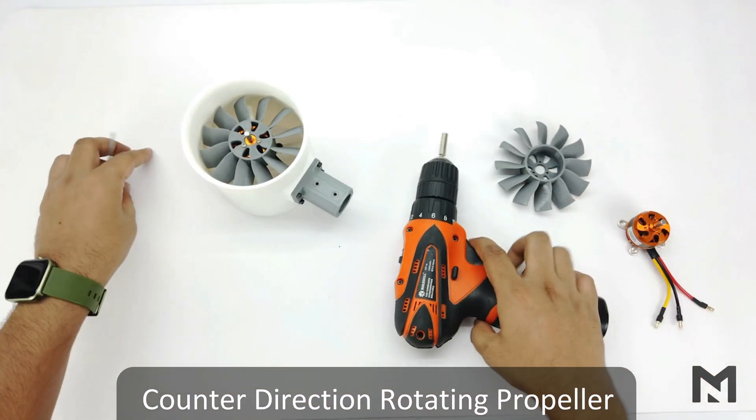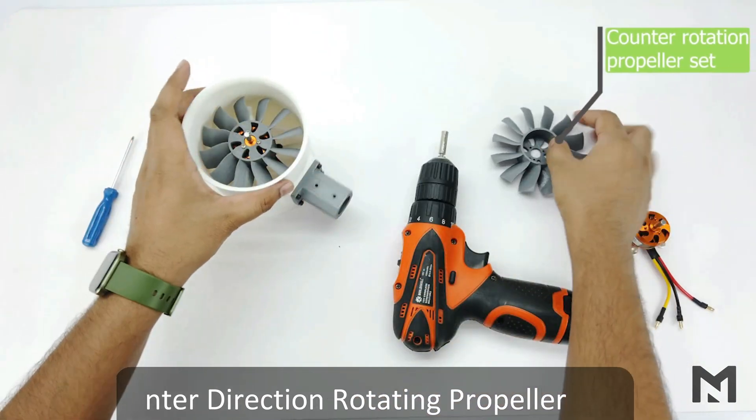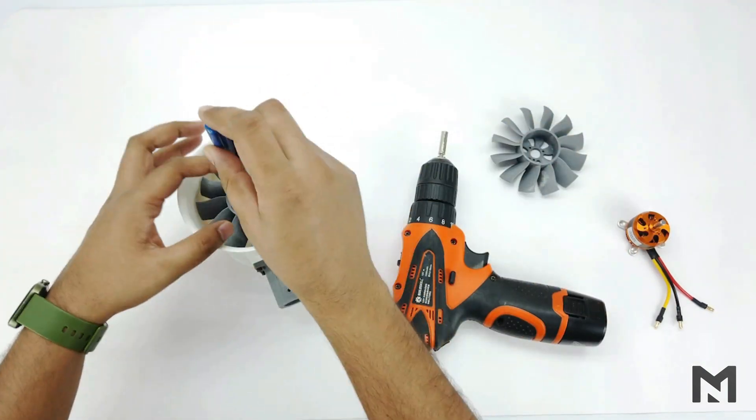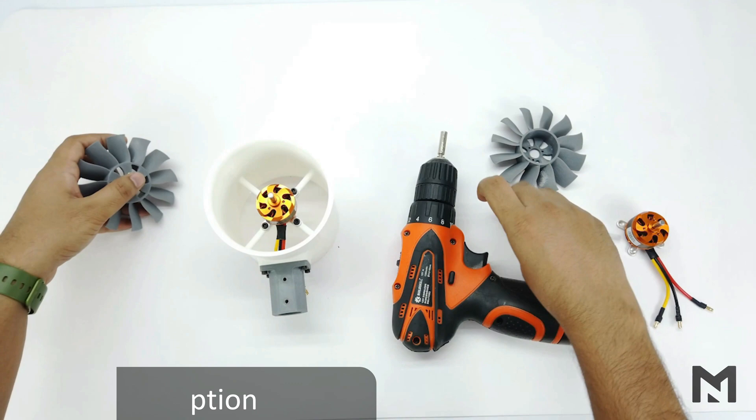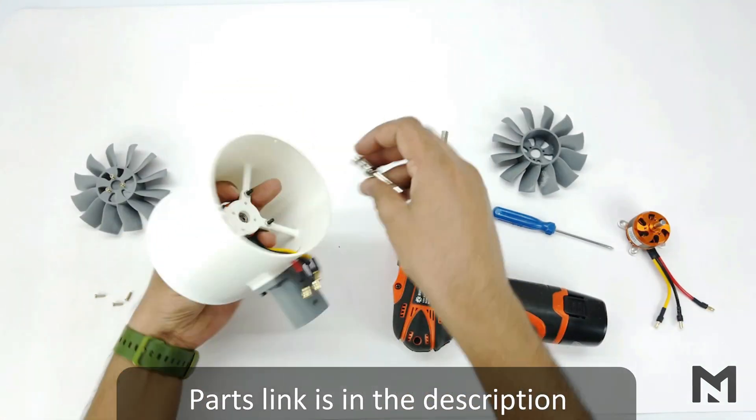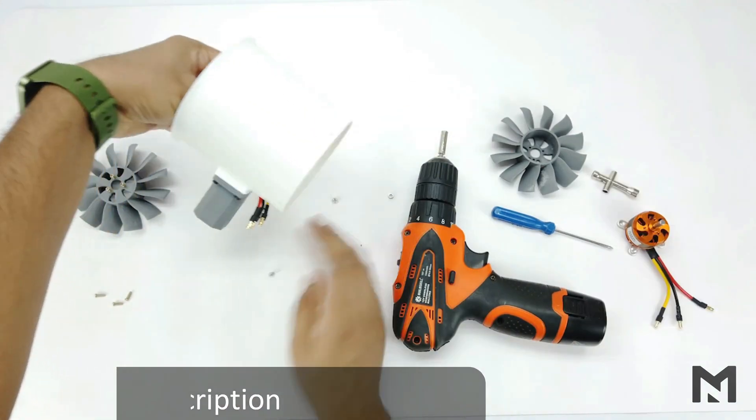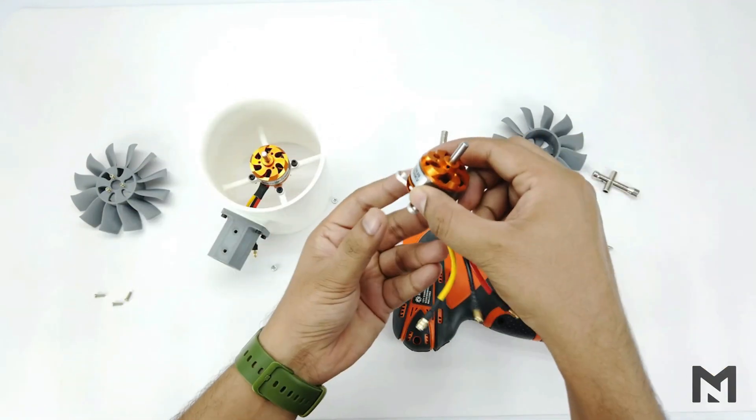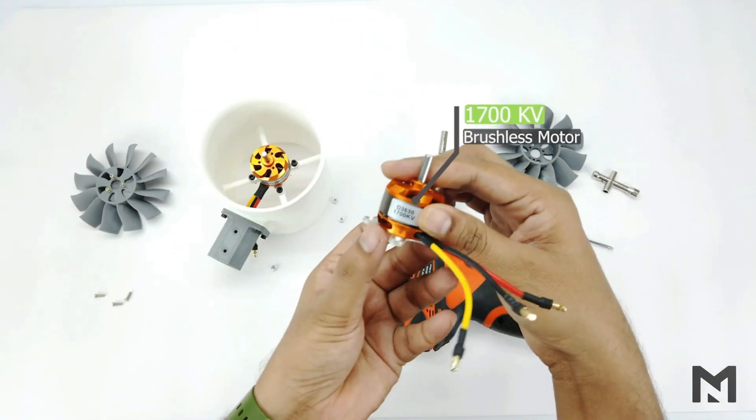So first we will check the thrust of counter rotation configuration. I'll be using two 1700 KV motors.